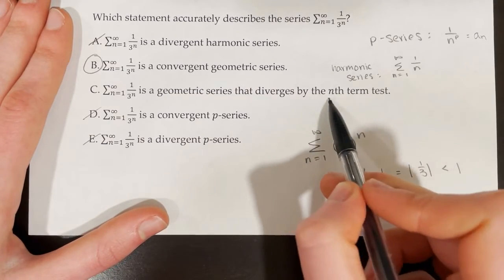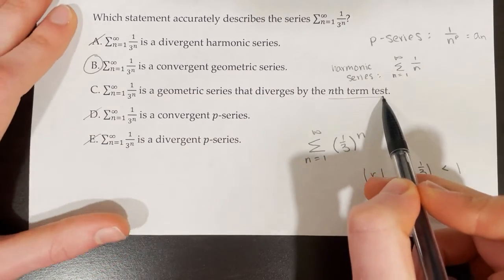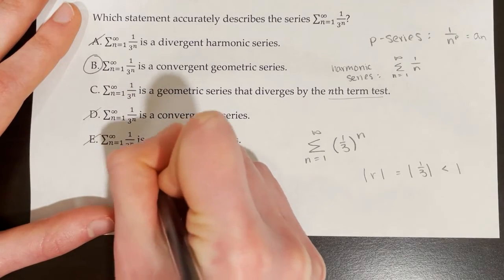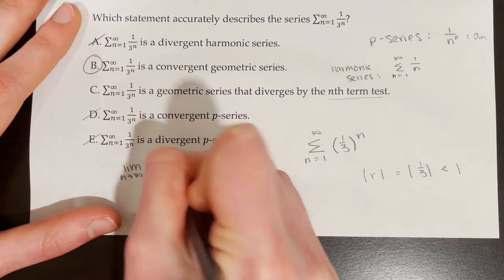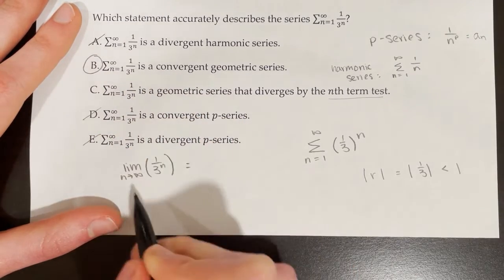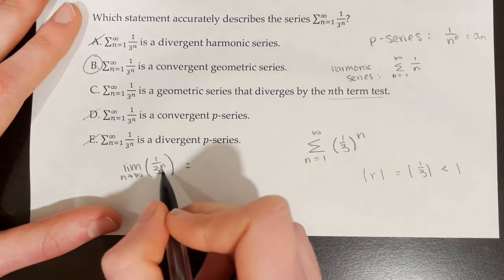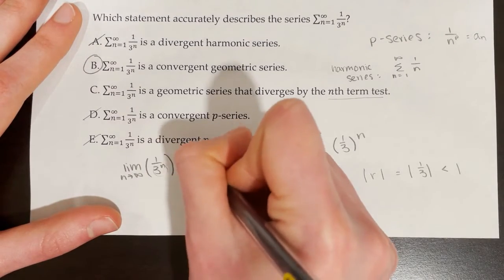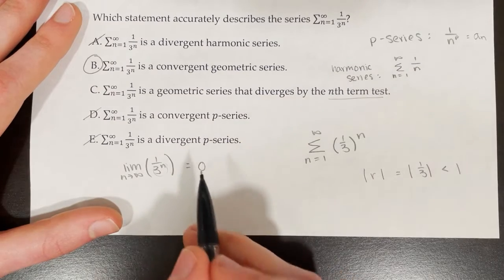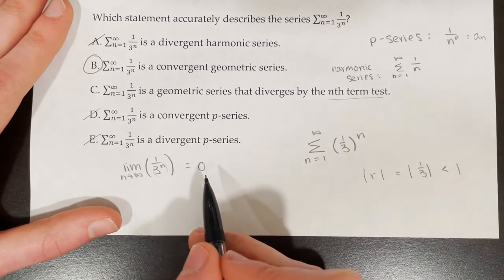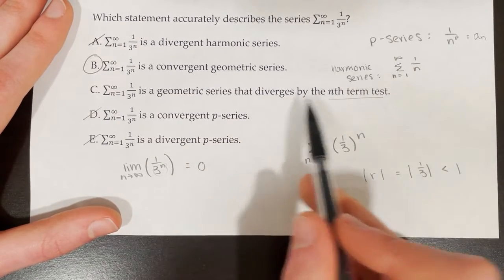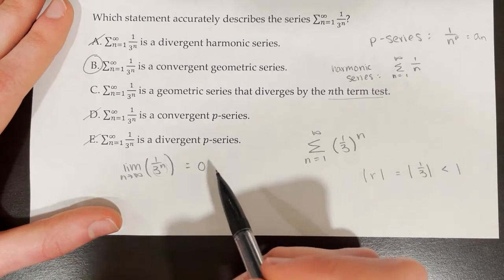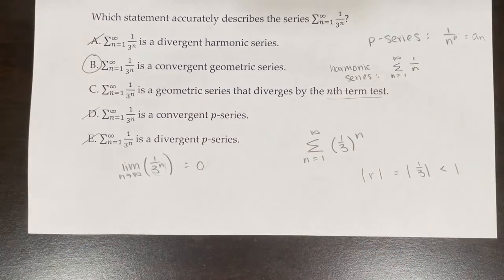If you tried the nth term test — taking the limit as n approaches infinity of 1 over 3 to the power of n — you'd get 1 over a very large number, which equals 0. When the nth term test produces 0, it is inconclusive. We would not say it diverges by the nth term test unless the limit of a sub n was not equal to 0. Therefore, choice B — convergent geometric series — is correct.